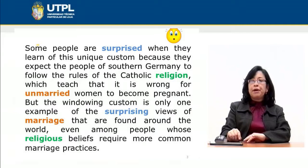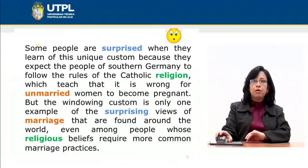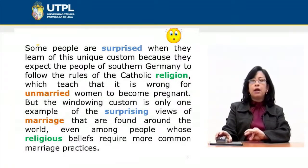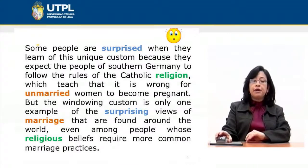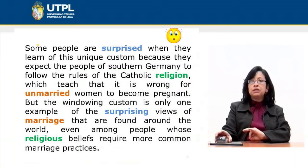We have a paragraph showing how we can use related word forms. The paragraph reads: 'Some people are surprised when they learn of this unique custom because they expect the people of southern Germany to follow the rules of the Catholic religion, which teaches that it is wrong for an unmarried woman to become pregnant. But the windowing custom is only one example of the surprising views of marriage that are found around the world, even among people whose religious beliefs require more common marriage practices.' This paragraph refers to a very special custom — the windowing custom — in one of the cultures around the world, specifically in southern Germany.